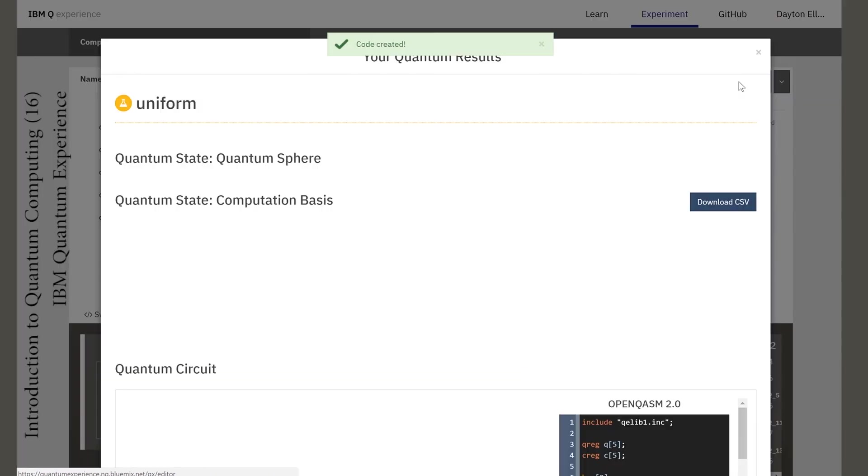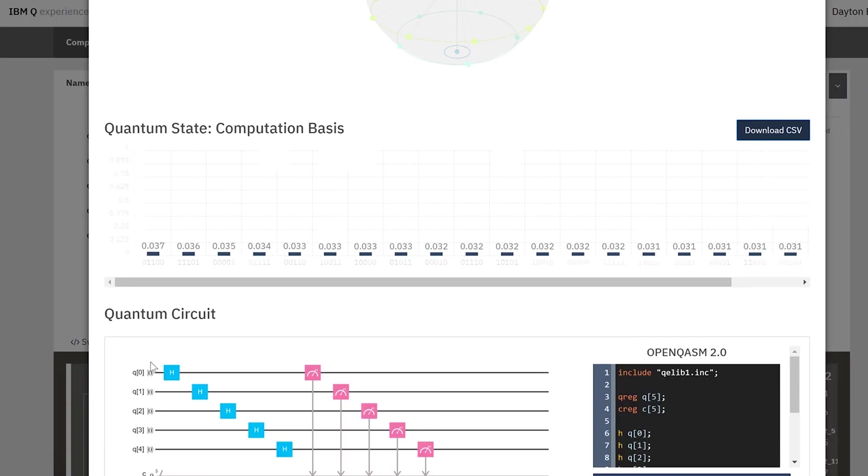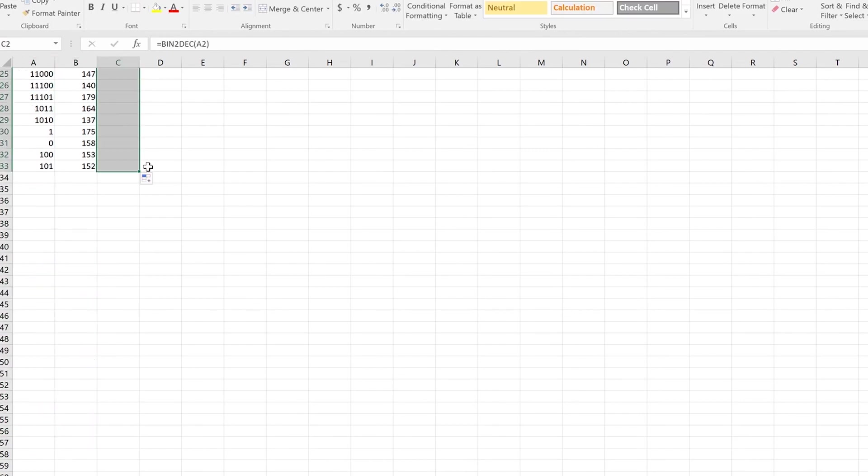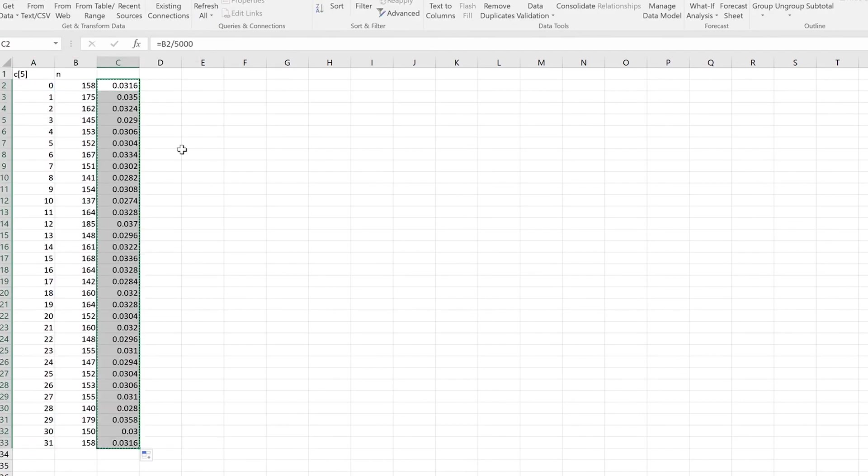Because there's so many different values I'll have to download the results. They're presented as a count of the number of times each basis state was observed. So to get a probability we divide this count by 5000, the number of times we ran the experiment. It seems this did create the uniform superposition. If we were to run this experiment an infinite number of times we would see these numbers converge to 1/32.